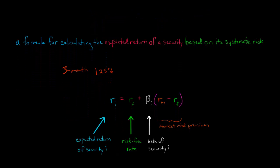So when we take the market risk premium, we multiply it by the beta of that security, and then we add the risk-free rate. That's going to tell us the expected return of security i. This whole thing is the Capital Asset Pricing Model, and I'm just laying out the different components.